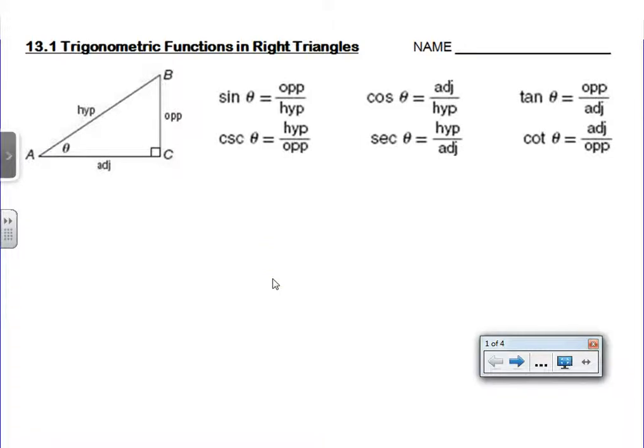So our lesson on 13.1 continues our work with special right triangles. We know all about sine, cosine, and tangent. Remember the mnemonic device we used for sine, cosine, and tangent? It was SOHCAHTOA.